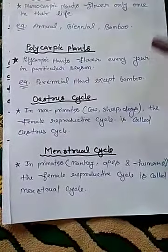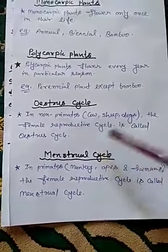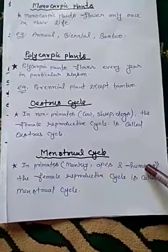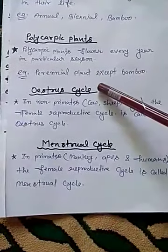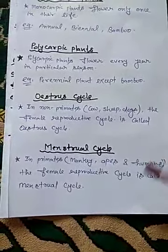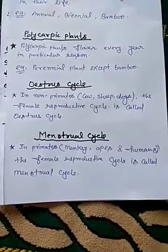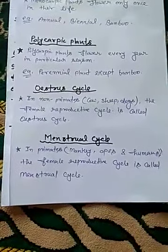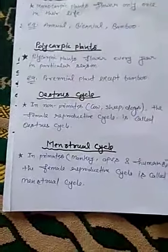The next important point is estrous cycle and menstrual cycle. In non-primate mammals like cow, sheep, and dog, the female reproductive cycle is called estrous cycle. But in primate mammals like monkey, apes, and human, the female reproductive cycle is called menstrual cycle. So estrous cycle is found in non-primates and menstrual cycle is found in primates.